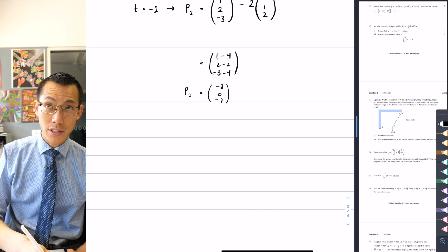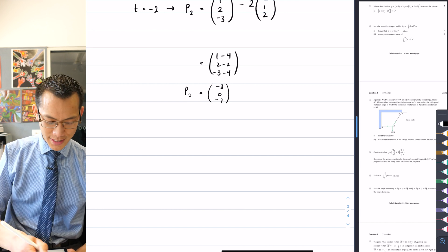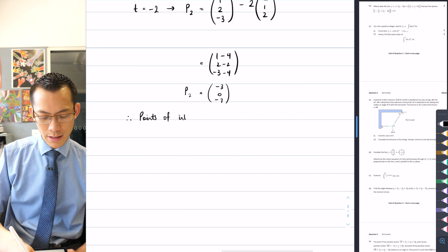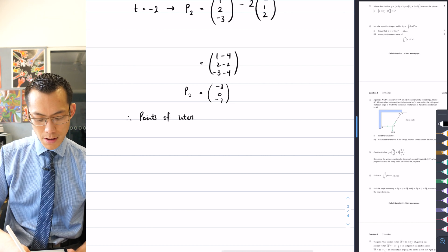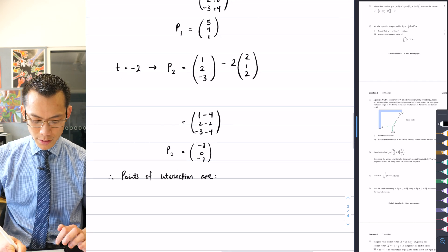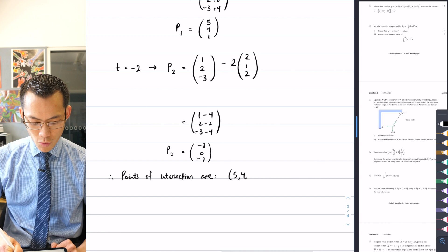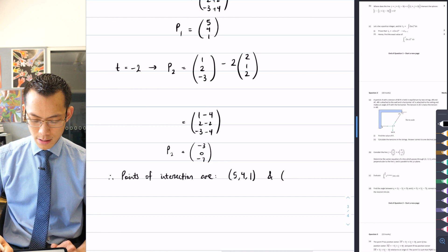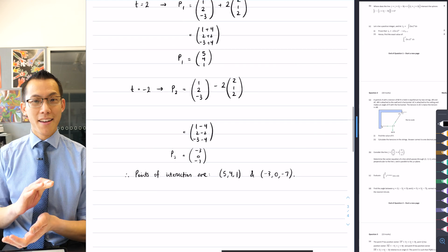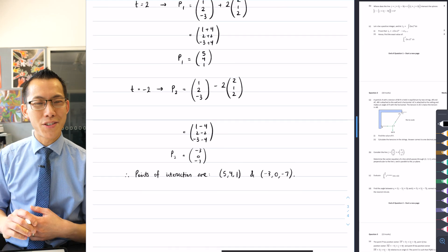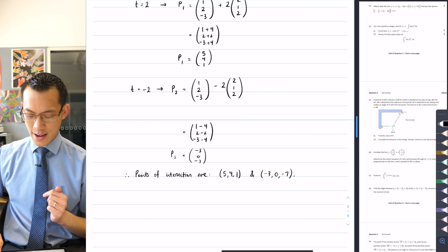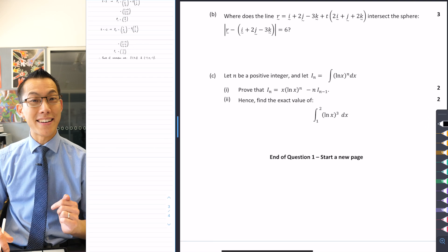So I'm pretty much done. I should tie this up neatly because I was asked for points of intersection, not vectors. Therefore, the points of intersection are 5 comma 4 comma 1, and negative 3 comma 0 comma negative 7. Happy times. Okay, so we have just found the points of intersection between that line and the sphere.